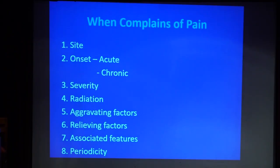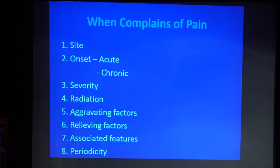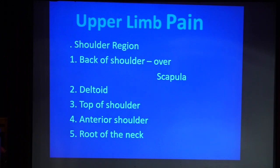I'm going to start with very simple things. When a patient complains of pain, as we were taught in medical school, the first and most important thing is the site. All these years I have learned that from the site alone, 80% of the time I know where the pain is coming from. Then onset — whether it's acute or chronic — and severity. I use a 1-to-10 scale, where 1 is minimal pain and 10 is severe pain.